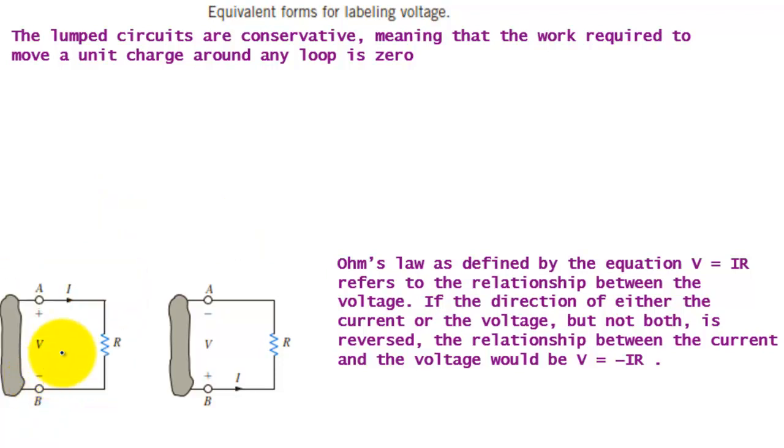Now if the polarity changes - this is plus, this is minus - and current is entering here, current is entering a negative terminal, then Ohm's law is V equals minus IR.